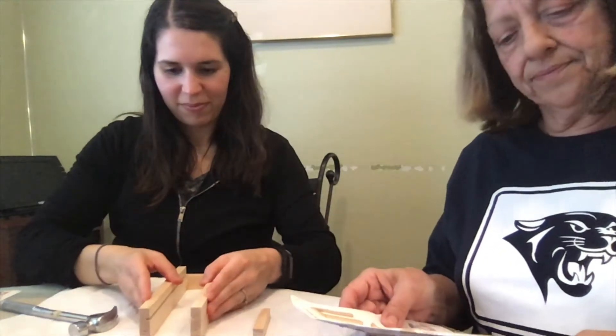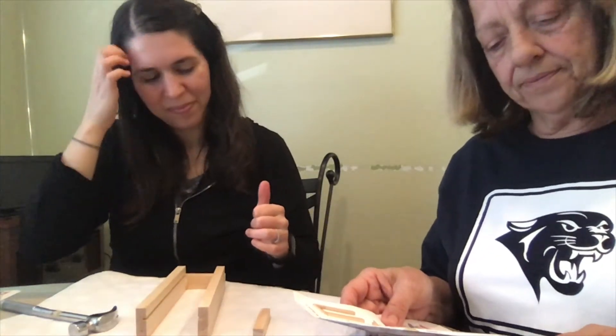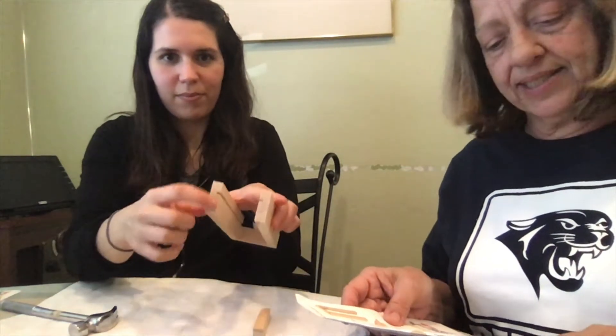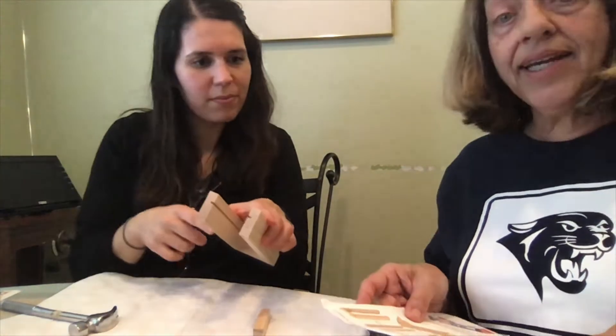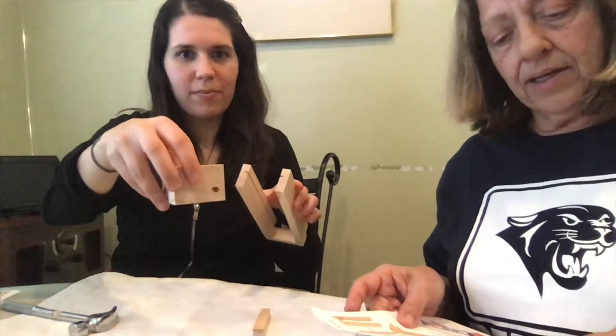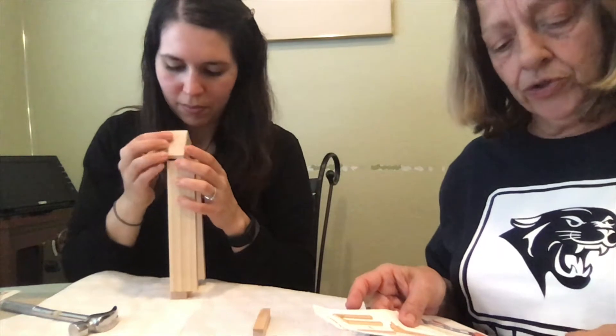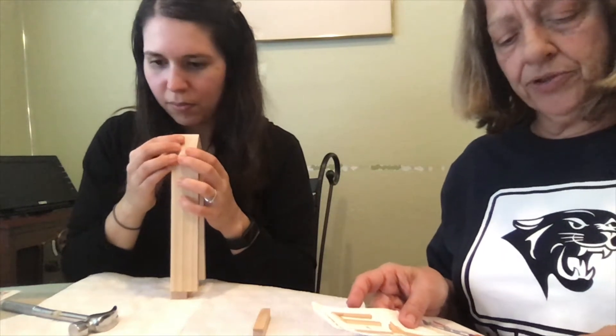Perfect. Step three, match the screw holes in the side pieces and the triangle tip piece. Attach them together with two screws using a number two Phillips screwdriver. Remember righty tighty, lefty loosey when you're using the screwdrivers.